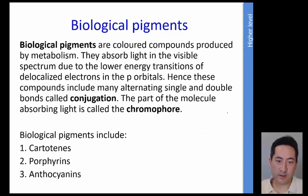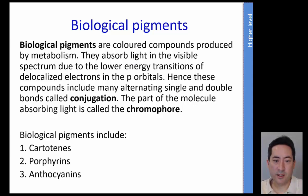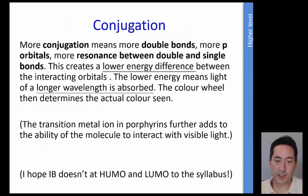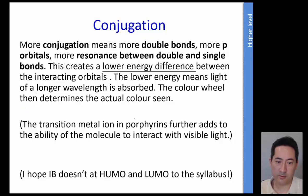First of all is conjugation. Conjugation is alternating single and double bonds. These are in the p orbitals, causing delocalized electrons. As they go up and down these p orbitals, they're absorbing energy. The more conjugation there is, the less distance between transitions, the less energy, and therefore they're of a larger wavelength. You can use your color wheel to determine what light is formed. More conjugation means more double bonds, more p orbitals, more resonance between double and single bonds. This creates a lower energy difference between the interacting orbitals - lower energy means light of a longer wavelength, and the color wheel will tell you the answer.